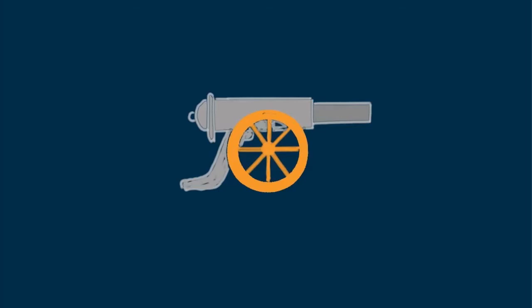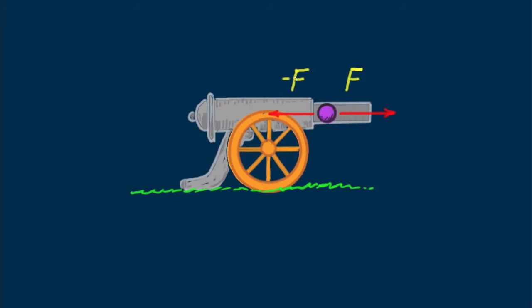Now consider a cannon being fired. Looking at the cannonball part way down the barrel: a force pushes the cannonball while an equal and opposite force pushes back on the cannon, causing its recoil. Since this pair of equal and opposite forces occur for the same length of time, the impulses are also equal and opposite. So impulses relate to Newton's third law. This pair of impulses is internal to the system consisting of the cannon and cannonball — internal impulses don't change the momentum of the system.